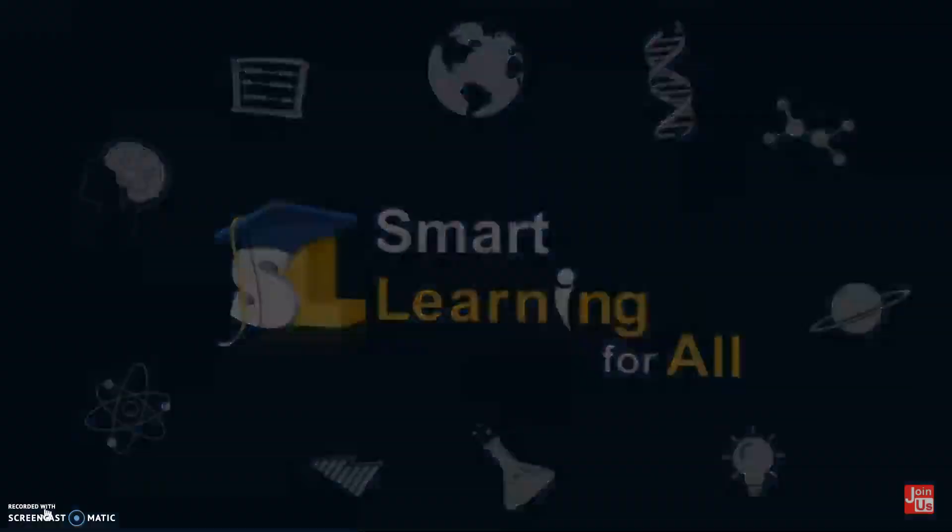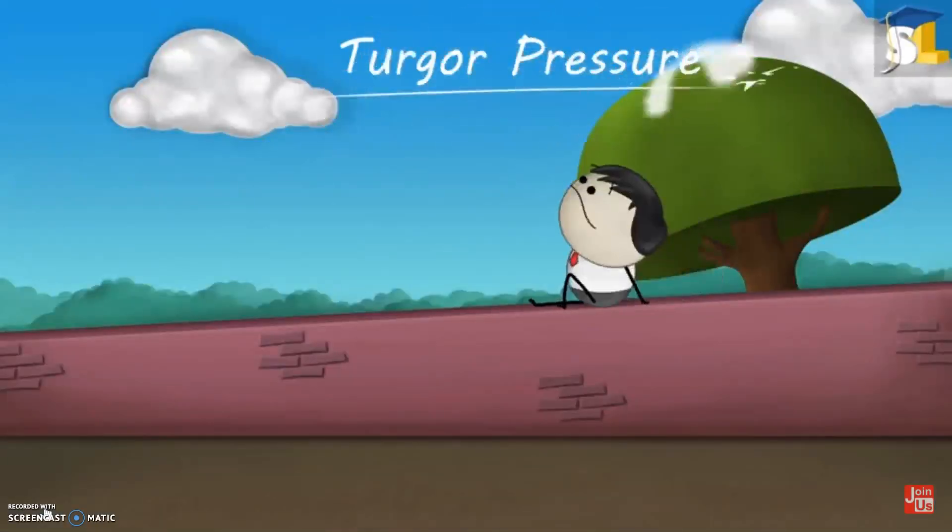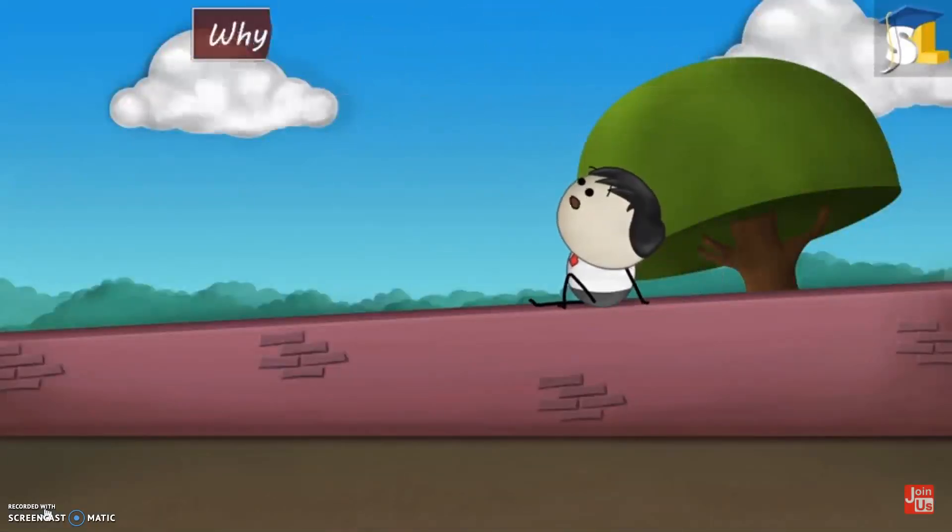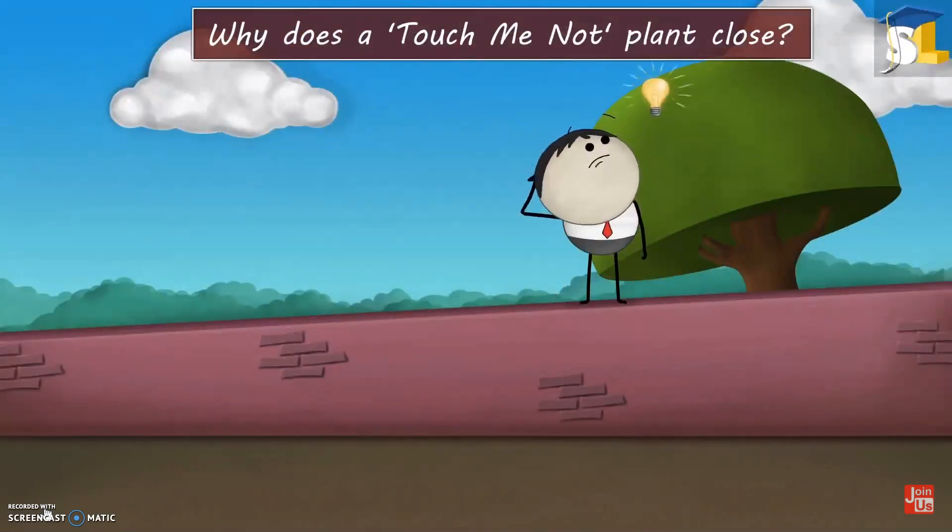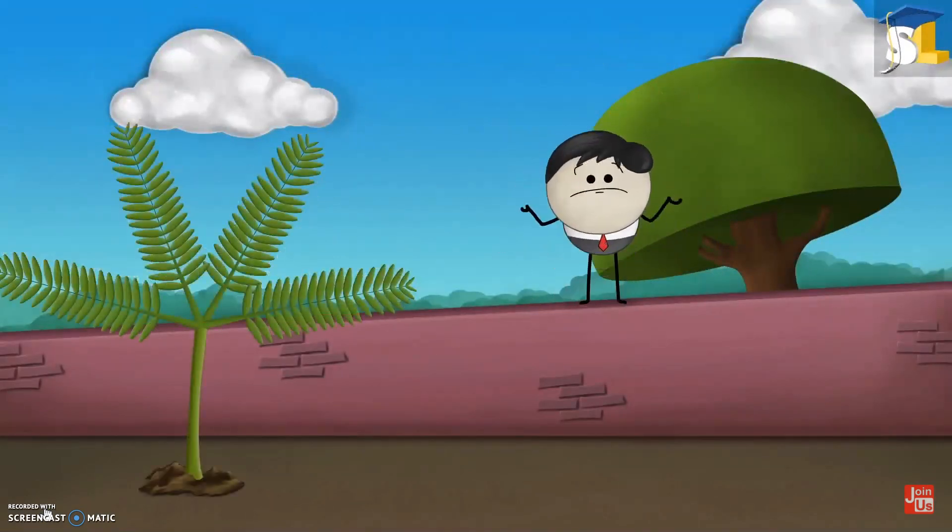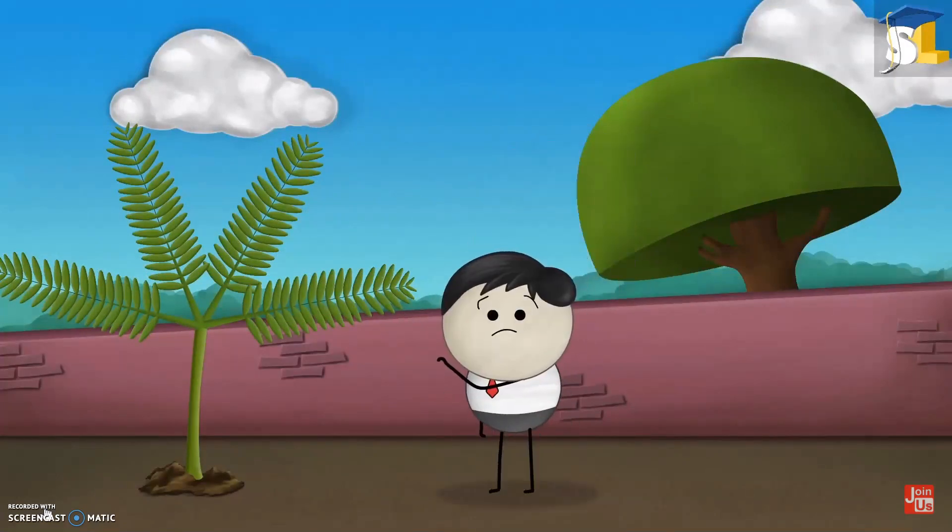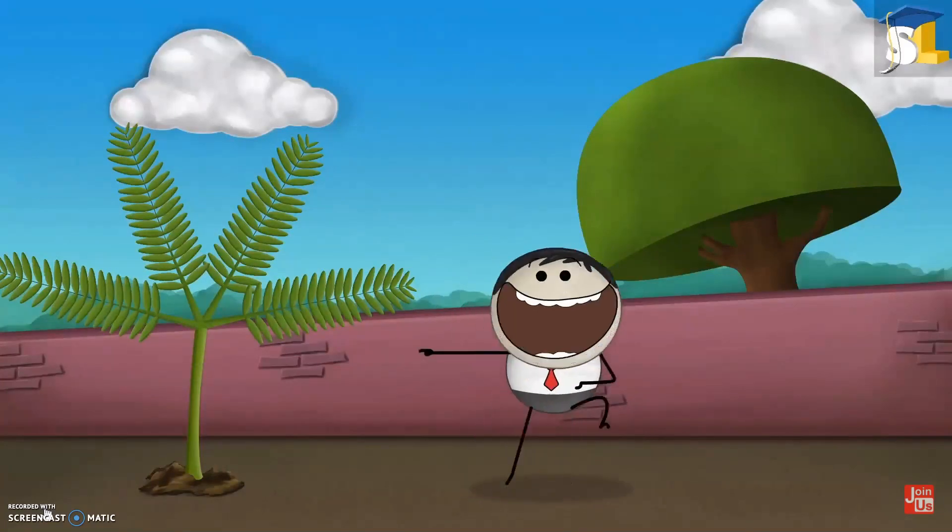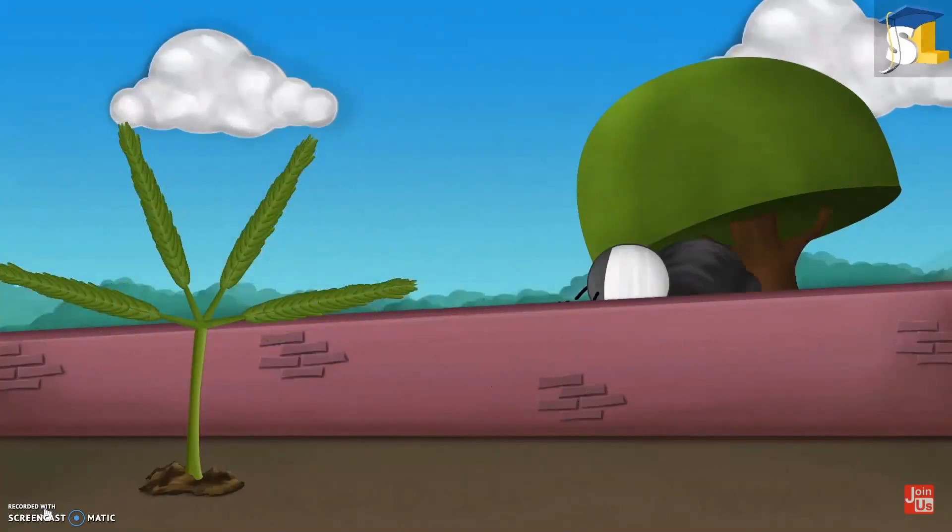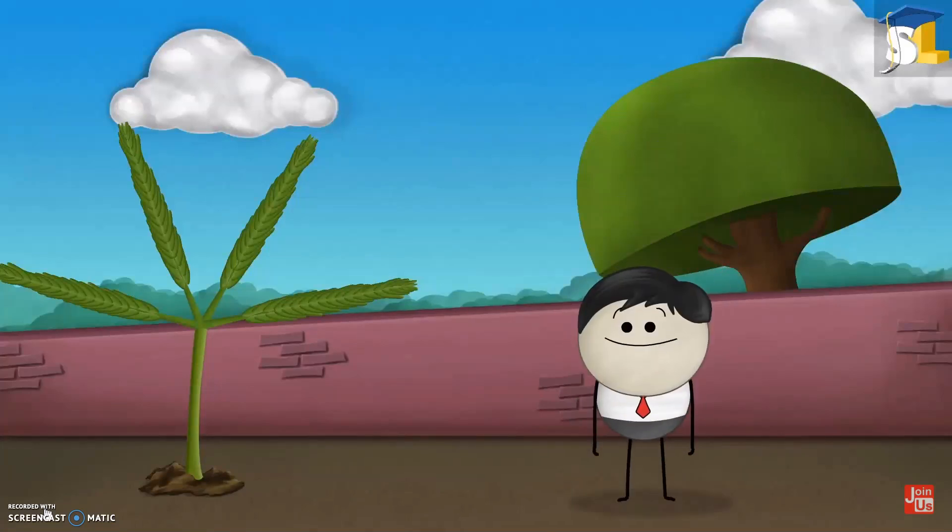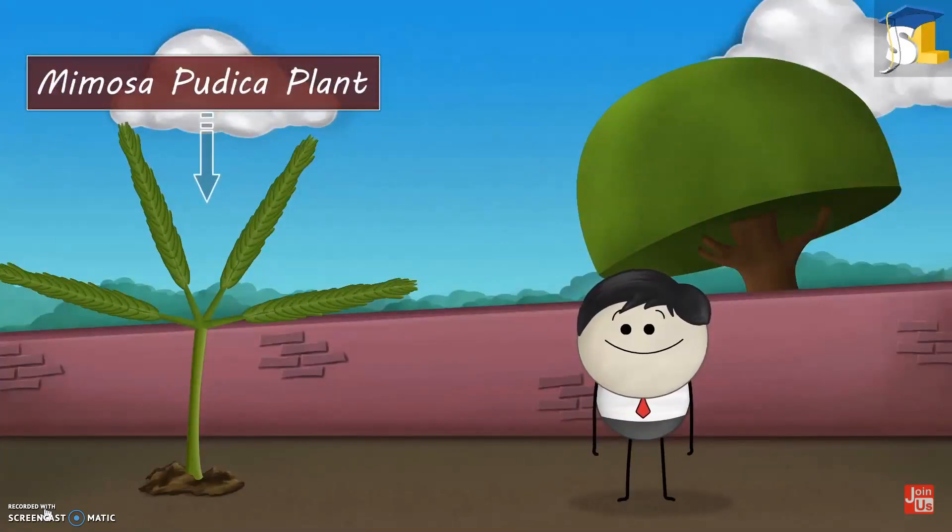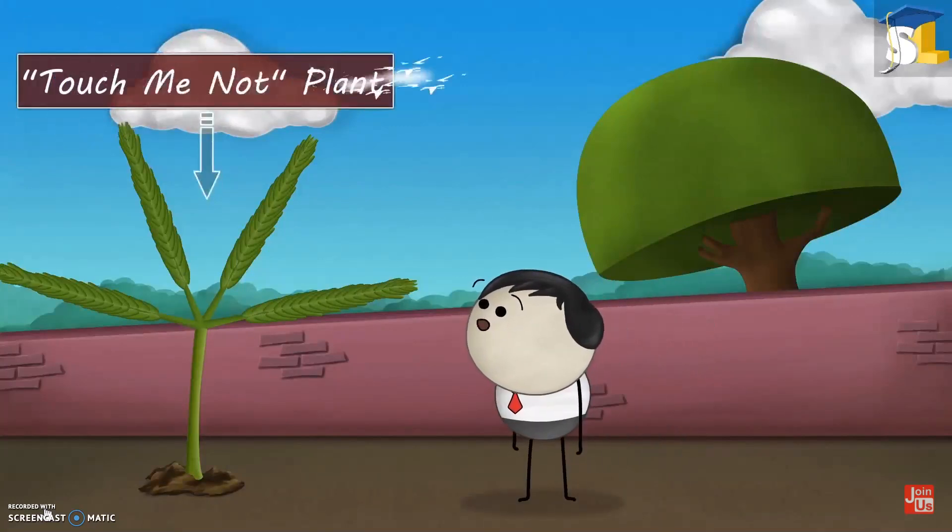Smart learning for all. Topic, turgor pressure. Why does a touch-me-not plant close? Hey, don't touch that plant. You will get scared. See, you did not listen to me. Don't worry, nothing to be scared about. Let me tell you more about this plant. This plant is called the mimosa pudica plant. Another name for it is touch-me-not plant.